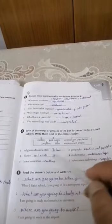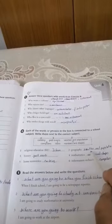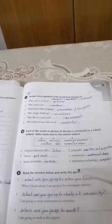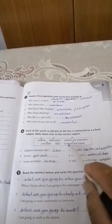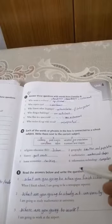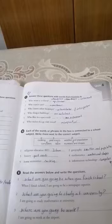Two, geography, weather and population. Three, history means past events. Four, mathematics, numbers and shapes. Five, home economics, cooking. Information, number six, information technology, computers.